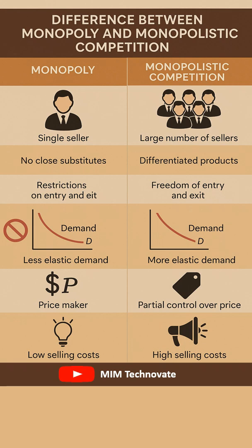Within a monopoly, only informative selling costs are typically incurred. In contrast, the monopolistic market incurs high selling costs.